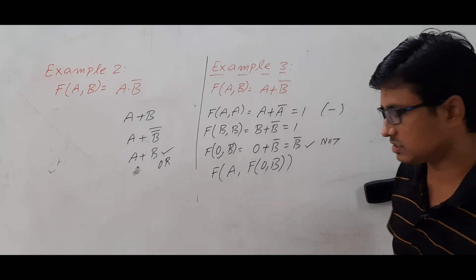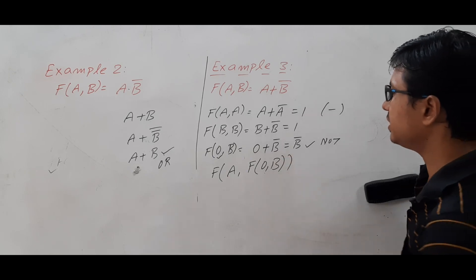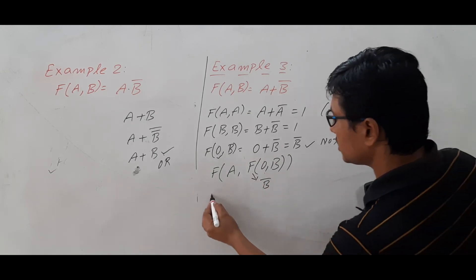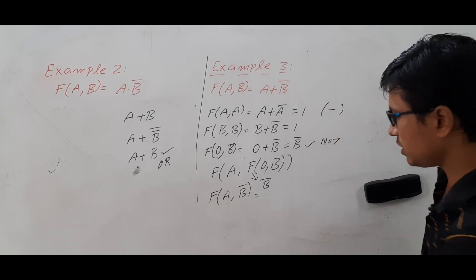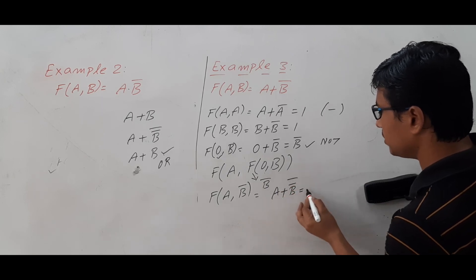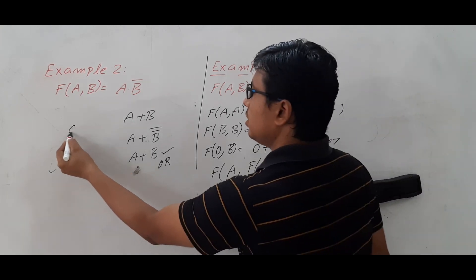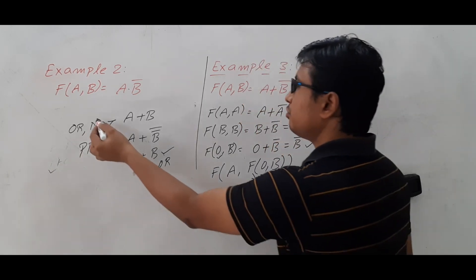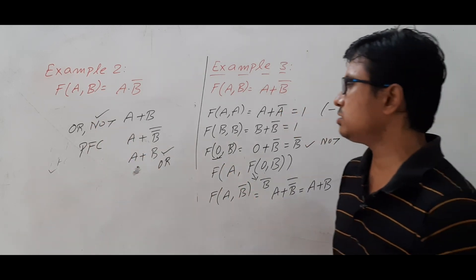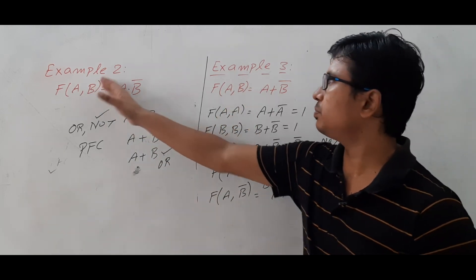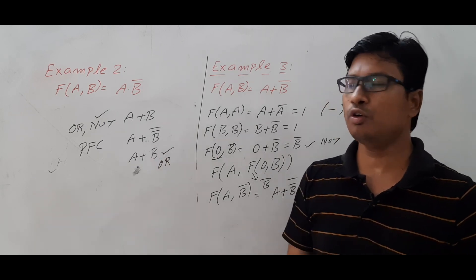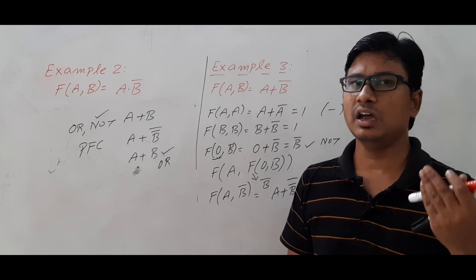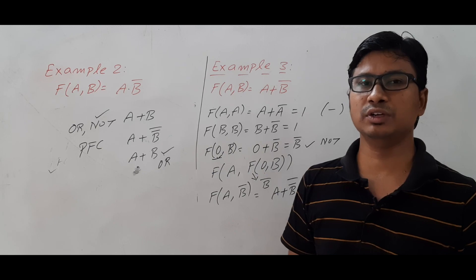The inner function f(0, b) gives b-complement, so the outer function becomes f(a, b-complement), which equals a OR b-complement-complement, which equals a OR b. So I got OR, and I already got NOT. Therefore Example 3 is also partially functionally complete — because finding NOT required the constant 0. Both Example 2 and Example 3 are partially functionally complete. If you have any doubts, feel free to ask in the comments and I will reply within 24 hours. Thank you for watching, have a nice day.